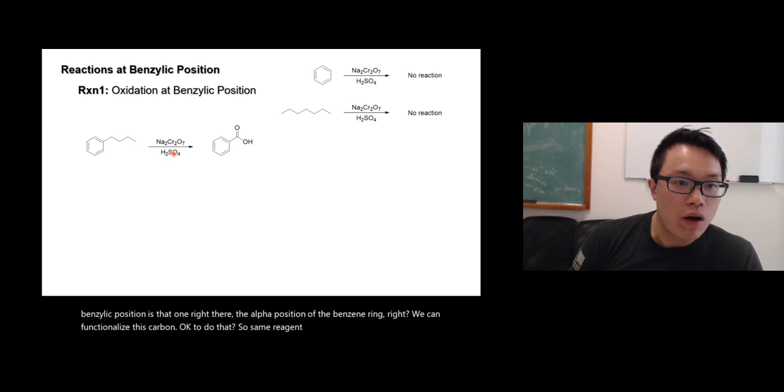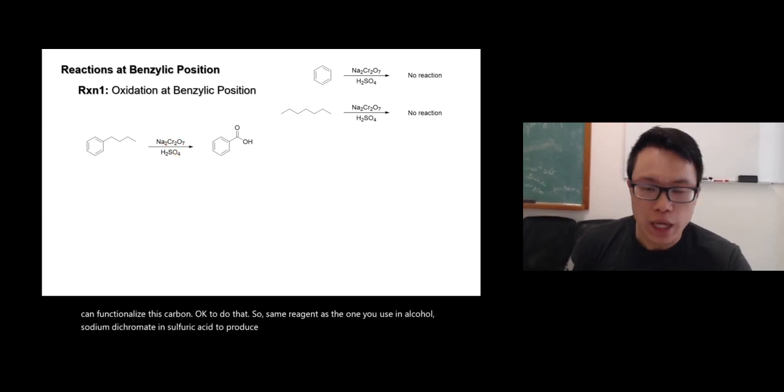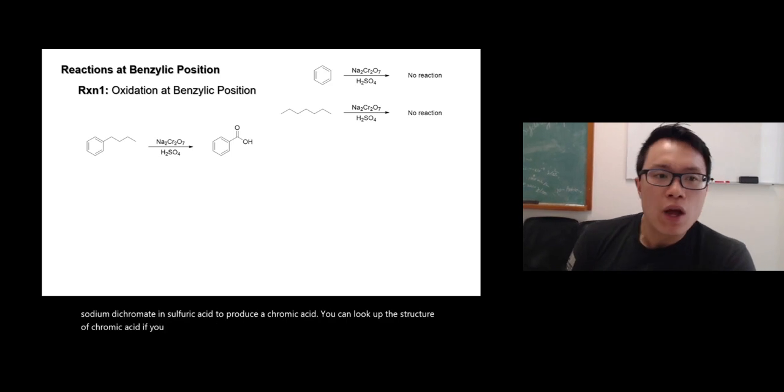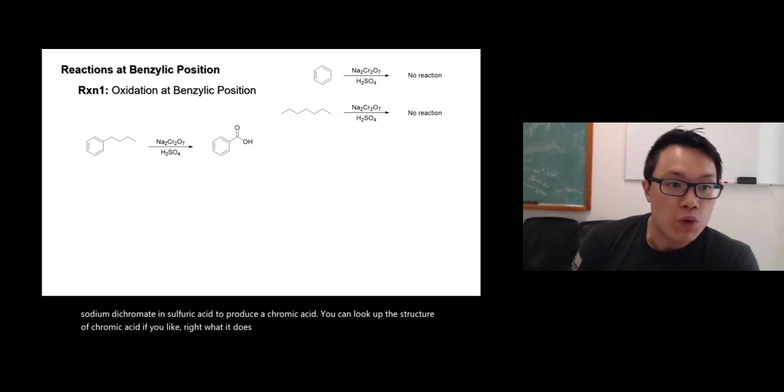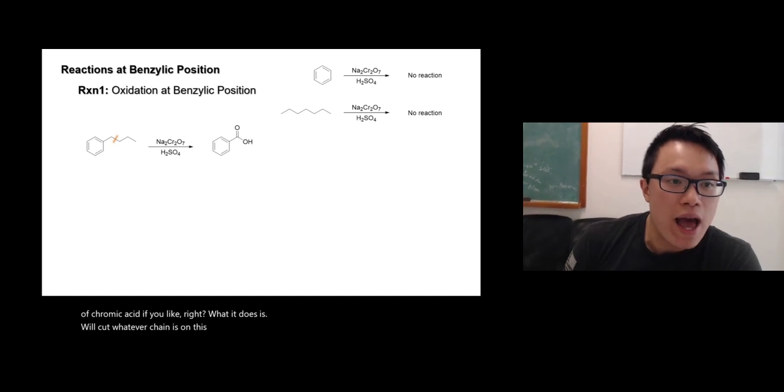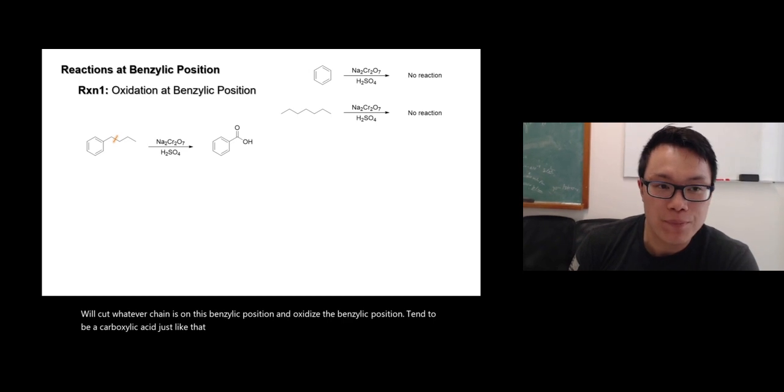Same reagent as the one you use in alcohol - sodium dichromate in sulfuric acid to produce chromic acid. You can look at the structure of chromic acid if you like. What it does is it will cut whatever chain is on this benzylic position and oxidize the benzylic position to a carboxylic acid.